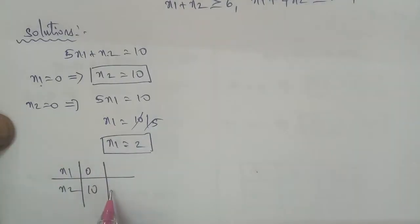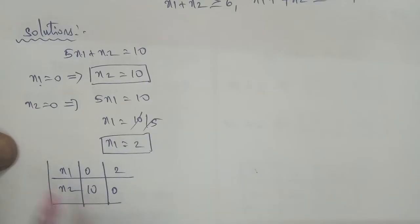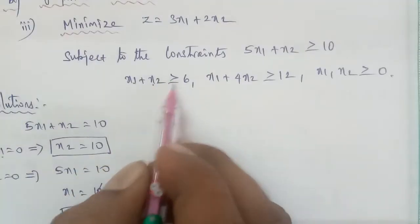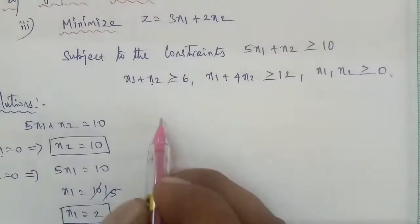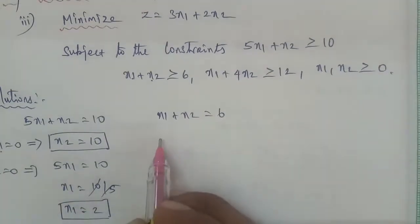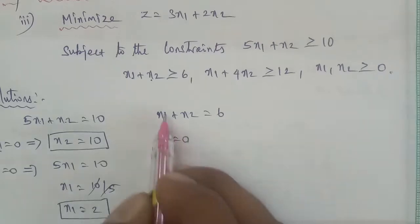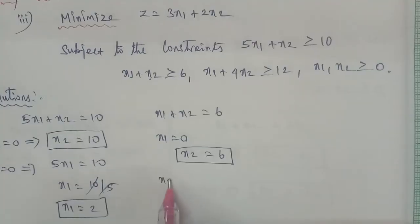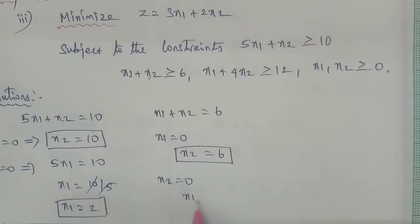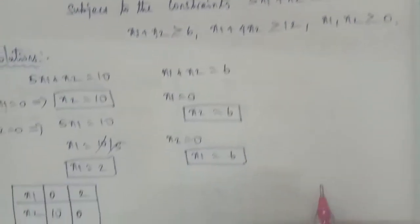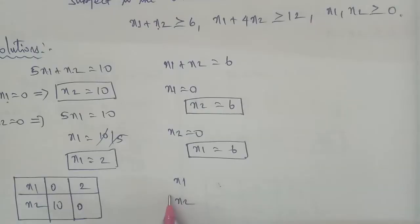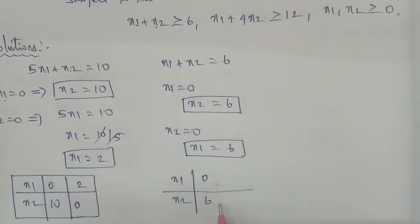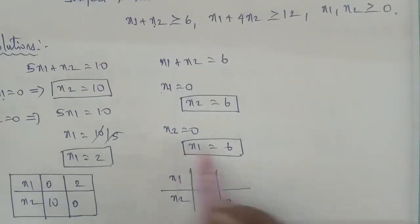The second equation: x1 plus x2 is equal to 6. We create a table for x1 and x2. When x1 is 0, x2 is 6, giving point (0,6). When x2 is 0, x1 is 6, giving point (6,0).